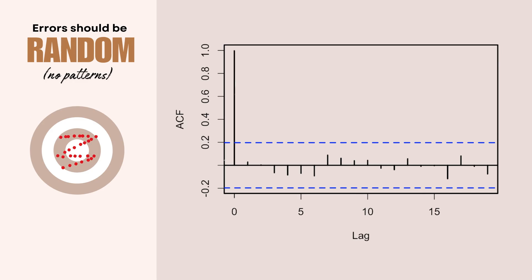So let's start with our first test, which is the random errors. So we want our errors to have no predictable pattern. They should be independent of previous errors, and therefore there should be no systematic over or under prediction. And we can test this with an ACF plot, or an autocorrelation function plot.